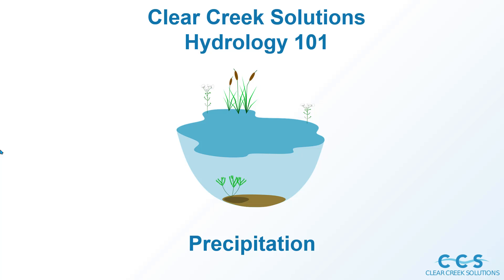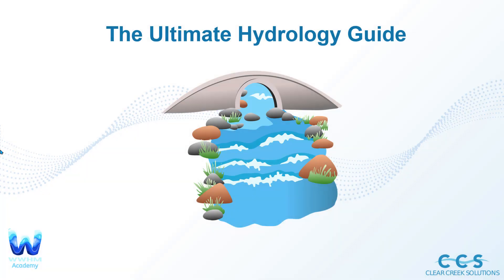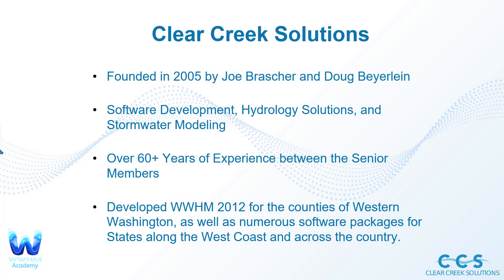Hello stormwater designers, welcome back to Clear Creek Solutions instructional videos — hydrology education videos. In this lesson we're going to go over precipitation: how it's measured and some of the various forms precipitation can be in. You can download our ultimate hydrology guide, which explains all the different kinds of hydrology, how we calculate peak flows, and different stormwater methods. Click the link below to download it for 100% free.